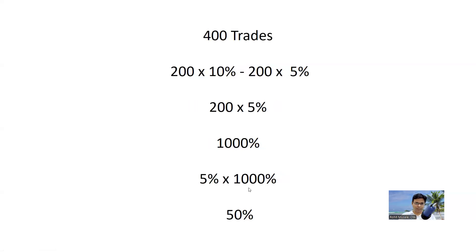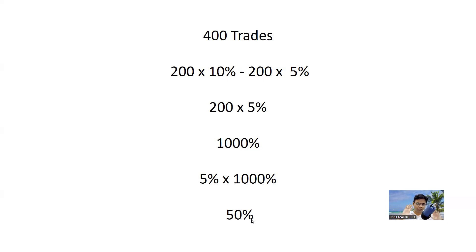You will have to take 400 trades. Let's do the calculation: you take 400 trades in a year, out of 400, 200 will be winners and 200 will be losers. On the 200 winning trades, you make 10%, and on the 200 losing trades, you lose 5%. That's 200 times 5% = 1000%. But this is on a position size of 5%, not on your portfolio. So 1000% on a position size of 5% is 50% — your actual portfolio return.